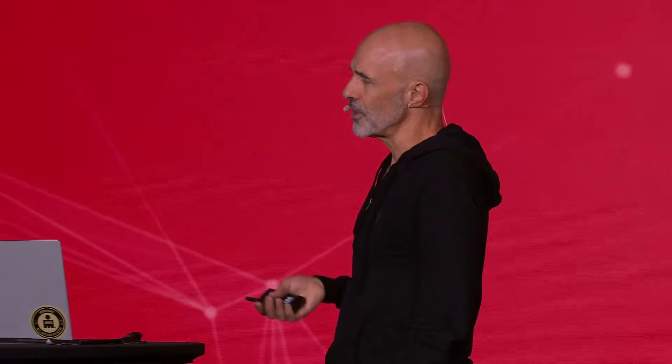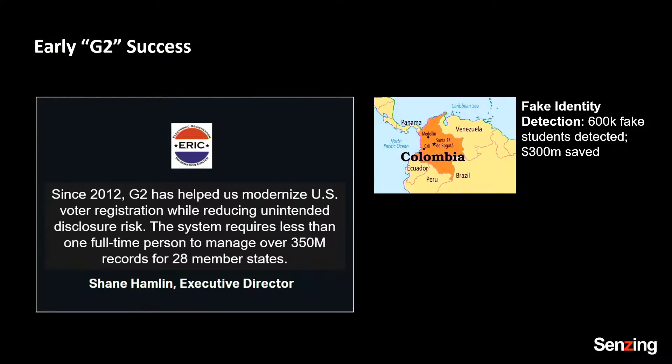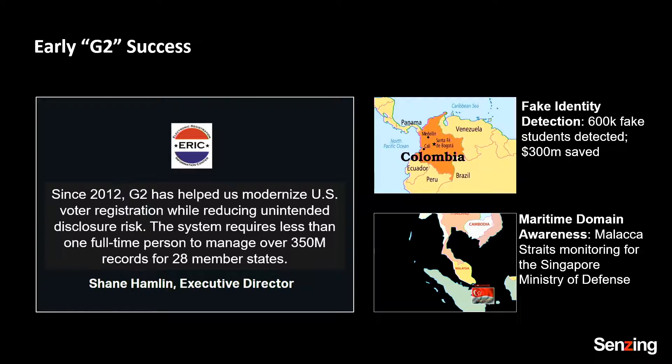This project my team and I are quite proud of — it's helping modernize voter registration in America. 350 million records, maybe four terabytes of data. This entire system is run by one person. The same software running on a laptop gets used by the government of Colombia to find 600,000 fake students and save 300 million. And it helps the Singaporeans resolve people, companies, and vessels — looking for vessels in the Malacca Straits that might be of some risk, so they can send folks with guns and masks to come and visit.